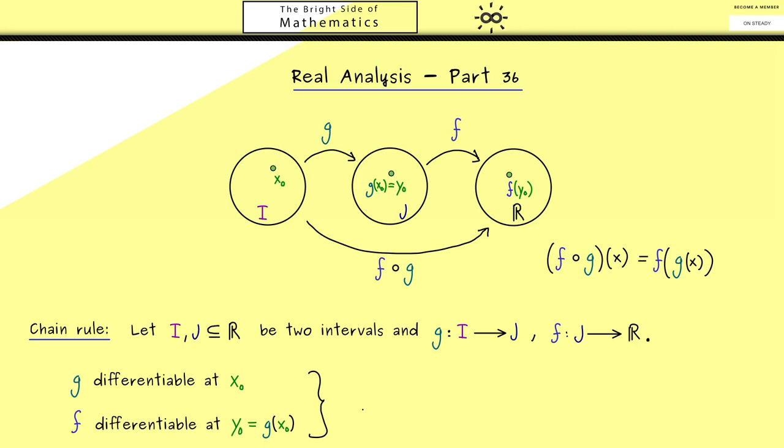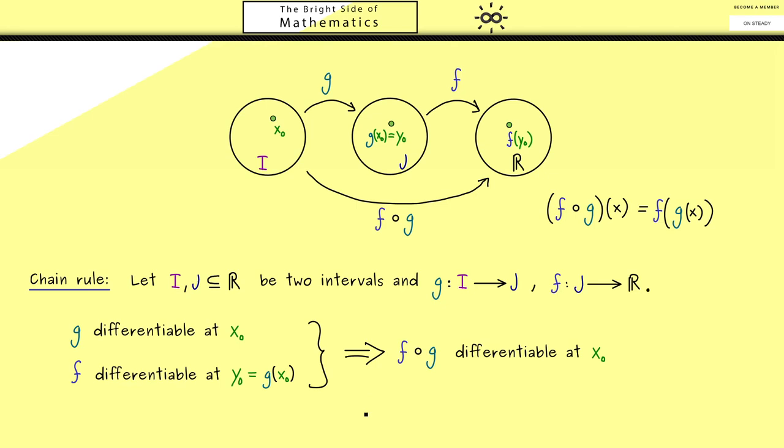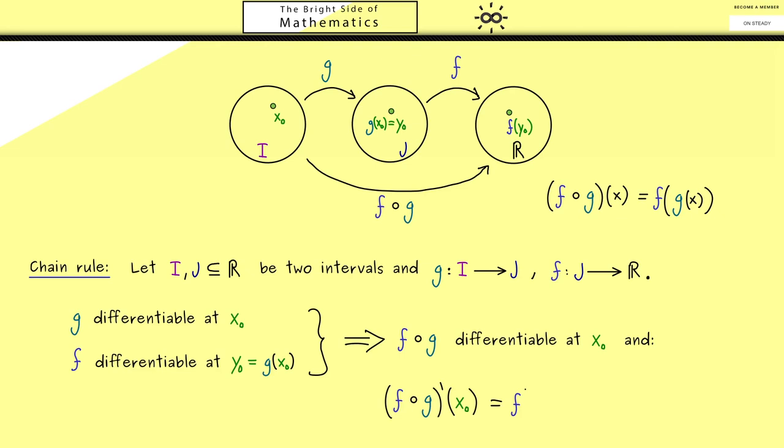And now our result is that we have the implication that the composition is also differentiable at x₀. In fact we know even more, we also know how to calculate the derivative. So (f∘g)'(x₀) is given by f'(y₀), which is the same as g(x₀), times g'(x₀). So the derivative of the outer function f gets multiplied by the derivative of the inner function g.